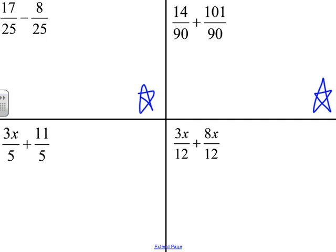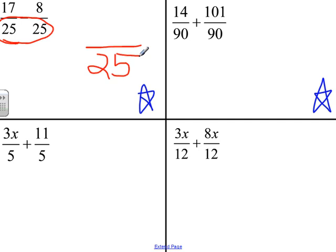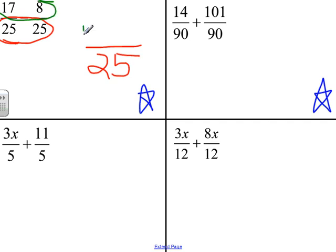Now if you've looked at them, you should recognize two important things. First — and this is usually where I start — the denominators of our two fractions are going to stay the same. These two fractions in the upper left-hand corner are out of 25, so our answer is going to be out of 25. We may be able to simplify the fraction, but we keep it out of 25. Now we subtract the numerators: 17 minus 8, and that gives us 9 out of 25.